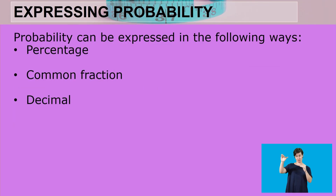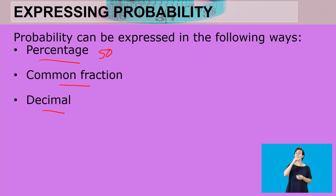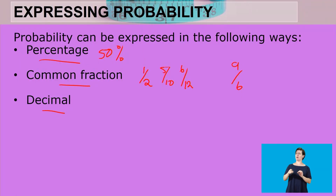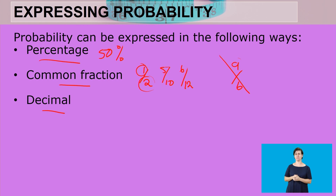Probability can be expressed as a percentage, a common fraction, or a decimal number. As a common fraction, 50% can be expressed as 1 over 2, or 5 over 10, or 6 over 12 — any equivalent fraction works. A common fraction has the numerator less than the denominator. The moment we have something like 9 over 6, that becomes an improper fraction, meaning favorable outcomes can never exceed all possible outcomes.